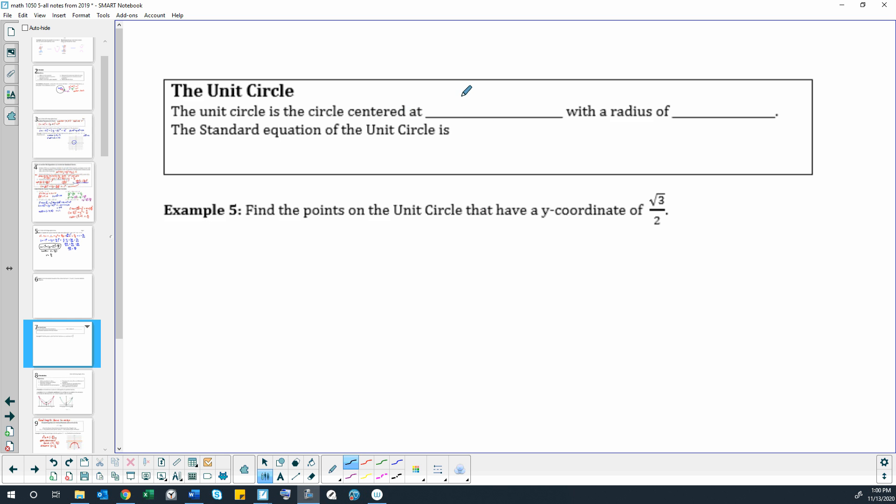So the unit circle is a circle centered at 0,0 with a radius of 1, 1 unit. That's why it's called the unit circle. So the standard equation of the unit circle is simply x squared plus y squared equals 1.